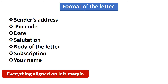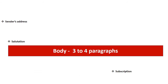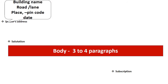The letter has: sender's address with PIN code, date, salutation, body of the letter, subscription, and your name. Your letter must have all of these things and the format should be followed strictly. Remember, everything should align on the left margin. For the sender's address, write building name, road name or lane name, followed by the place of living with PIN code.